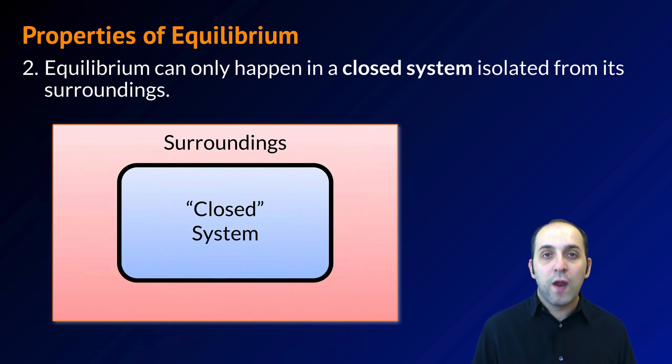The second property of equilibrium is that equilibrium can only happen in a closed system isolated from its surroundings. In systems thinking, we think about things as the system and the surroundings, and systems can either be closed or open. A closed system is one where nothing is being input into that system from the surroundings.